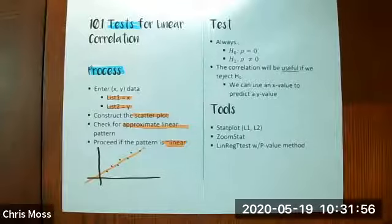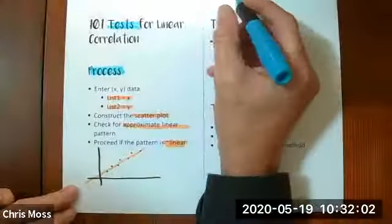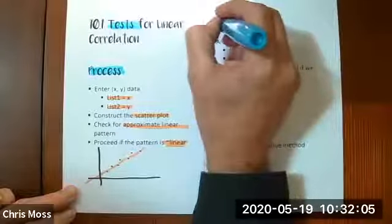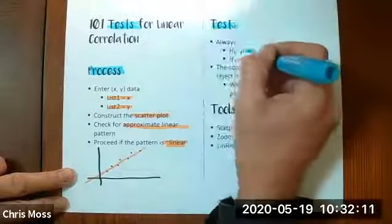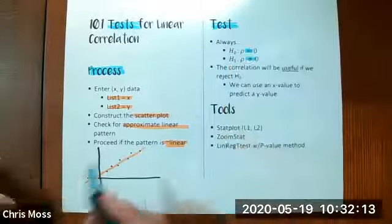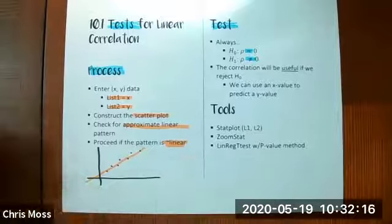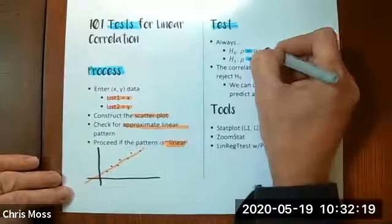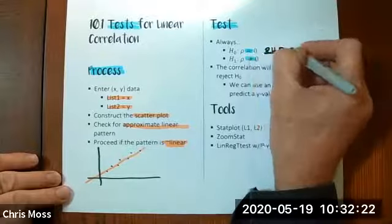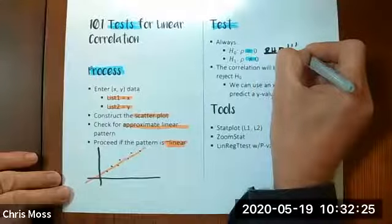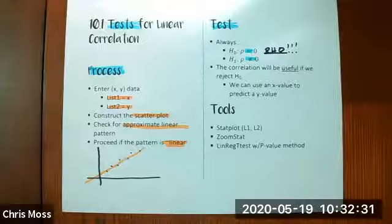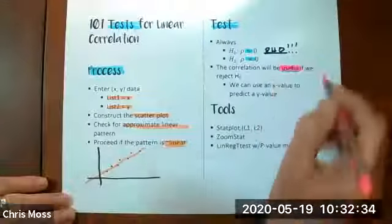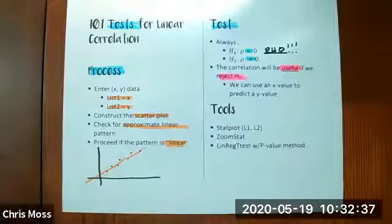I'm not going to be fussy. Just something that's approximately linear. Now, what about the test itself? Always, always, we test for rho equals zero for the null hypothesis, and rho not equal to zero for the alternative. I will remind people that that is the Greek letter rho, not like row your boat, but R-H-O, rho.